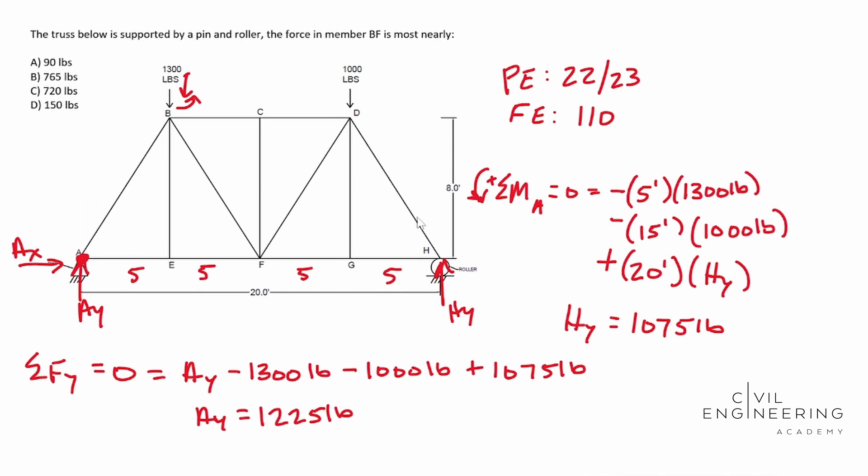Now we have everything that we really needed. We have all our unknowns. We know what aY is. We know what HY is. There's no forces in the X directions. So this aX is actually zero, no force in the X direction. Okay. And so let's identify the member that we need to solve BF.